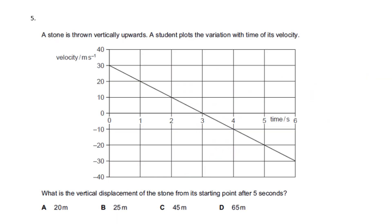Question five: a stone is thrown vertically upwards. A student plots the variation with time of its velocity. What is the vertical displacement of the stone from its starting point after five seconds?